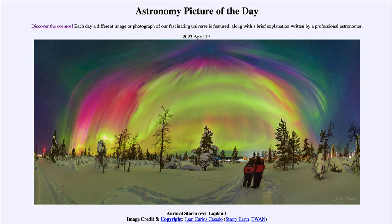Aurora are generally visible at high latitudes. Here we see Lapland, very far north. Other areas like Alaska and Canada are common places to see the aurora. However, this storm was intense enough to be visible much further south — in fact, as far south as New Mexico in the United States.